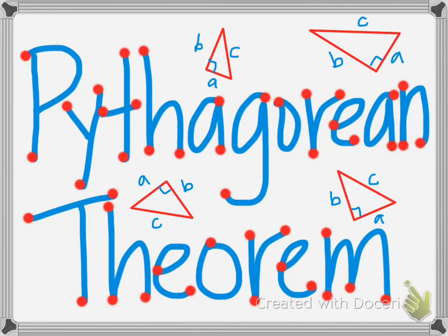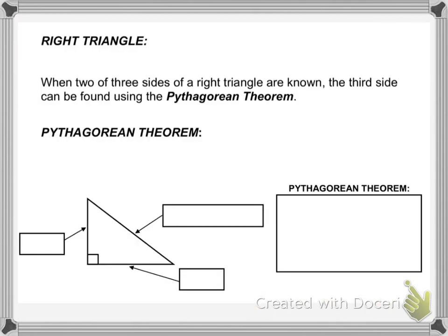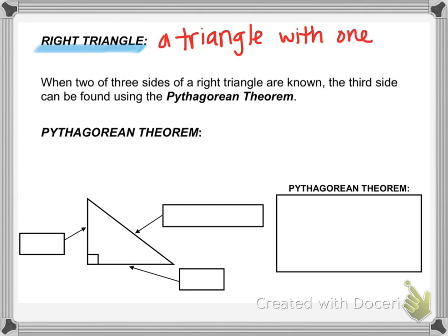Hello students. Today we will learn one of the most useful things that you can use in the real world, and that's the Pythagorean Theorem. It is important to know that when using the Pythagorean Theorem, it only applies to right triangles. A right triangle is a triangle with one right angle, and remember that a right angle has a measure of 90 degrees.